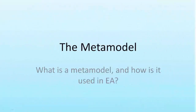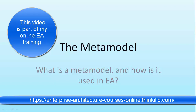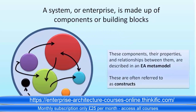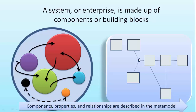The meta model is a really important concept in enterprise architecture. In this module we're going to look at what a meta model is and how it is used in enterprise architecture. We've already seen that an enterprise is a system, and that a system is made up of components or building blocks. Those components, their properties, and the relationships between them are described in an enterprise architecture meta model. Those components in the meta model are often referred to as constructs. It's not all the specific instances of an application, for example, but it's the notion that there is a thing called an application — one of the building blocks that make up an enterprise architecture.